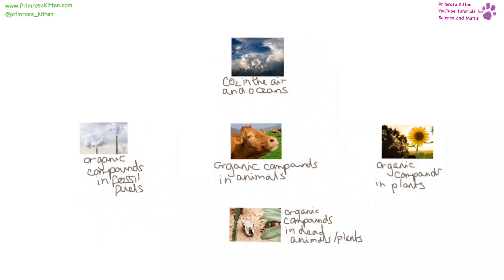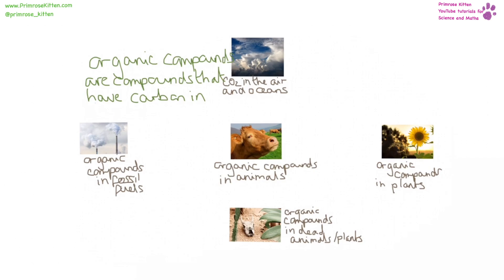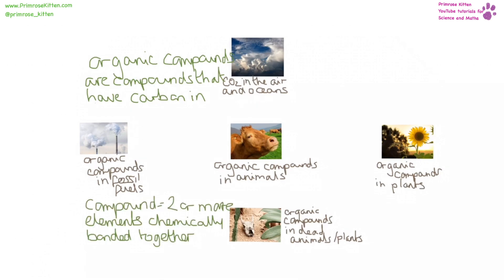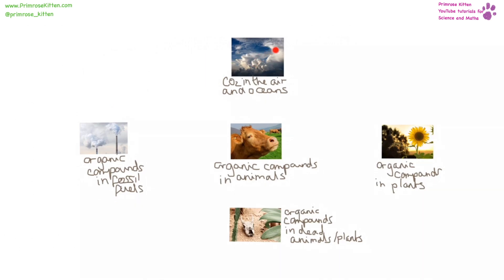For the carbon cycle, we refer a lot to organic compounds. Organic compounds are just any compound that has carbon in it — and a compound is two or more elements that are chemically bonded together. Carbon can be in a number of locations: carbon dioxide in the air, or dissolved in oceans; as organic compounds in plants or in animals; in dead plants and animals; and in fossil fuels.